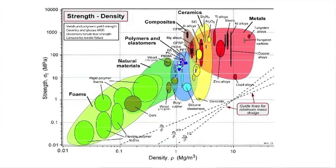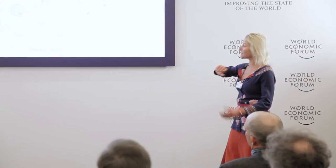In material science, this is a so-called material property space, where strength and density are tightly coupled. Materials that are very strong are also very heavy and dense, and vice versa — those are foams and flexible-type materials.